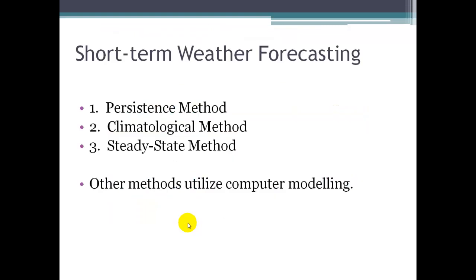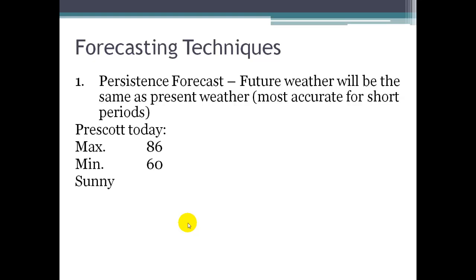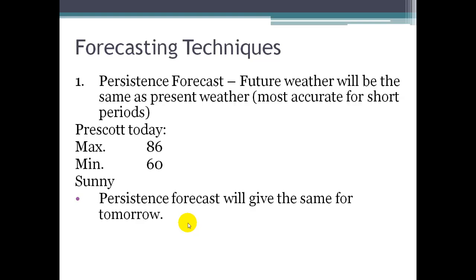In terms of short-term weather forecasting, there are many different types of models. I'm focusing on three of them: the persistence model, the climatological model, and the steady-state model. The persistence forecast basically says that future weather in the near future will be the same as the present weather. For example, if it's 86 degrees as a maximum temperature in Prescott today, and a minimum of 60 degrees, and it's a sunny day, then a persistence forecast will say tomorrow's going to be the same. Persistence forecasting works well for stagnant weather patterns when things really aren't changing much.